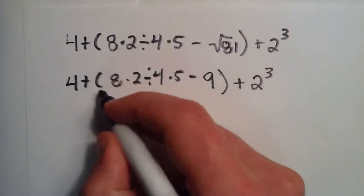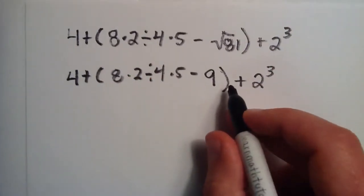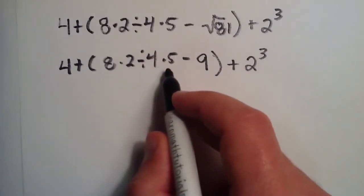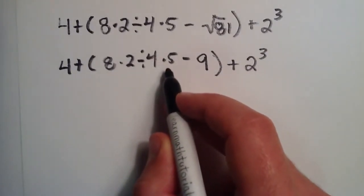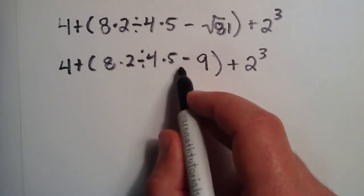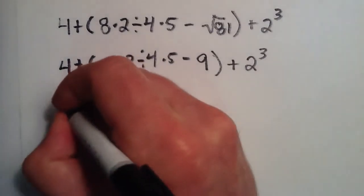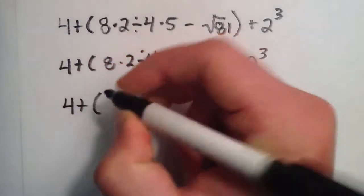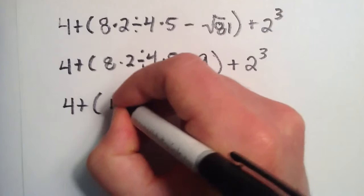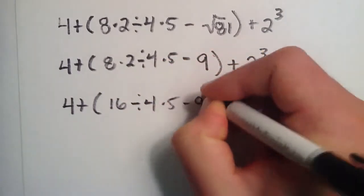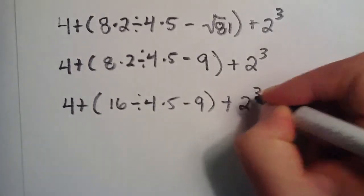And now we're still working inside the grouping because that's the most important. And inside the grouping, we have multiplication and division. So which one do we do first? Well, remember, when there's ambiguity, number 5 on our list was left to right. So we go ahead and do that. So 4 plus 8 times 2, which gives us 16, divided by 4, times 5, minus 9, plus 2 to the third power.